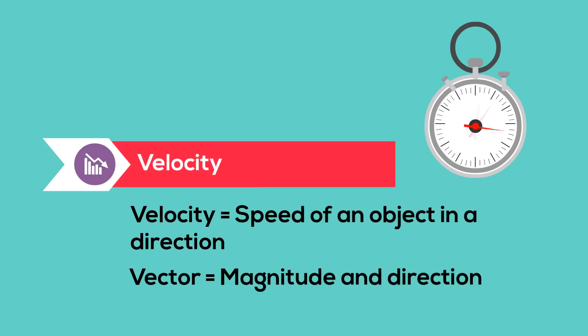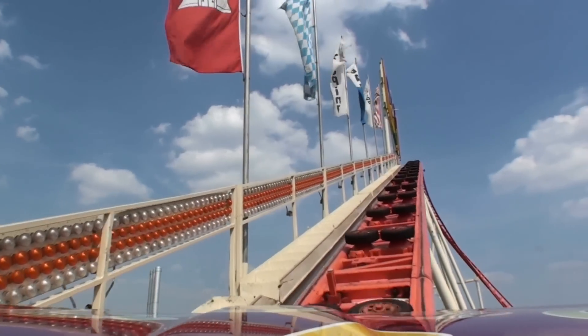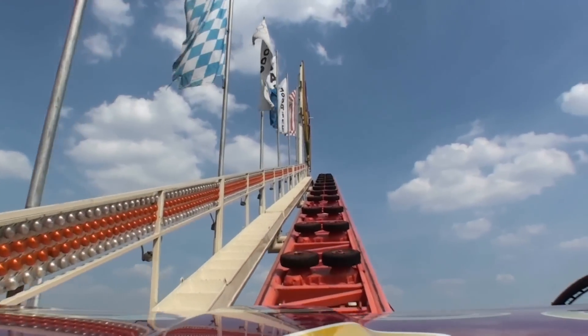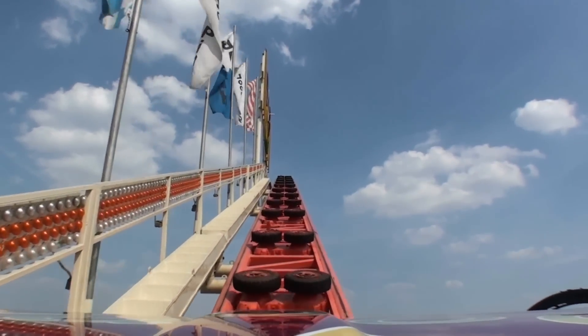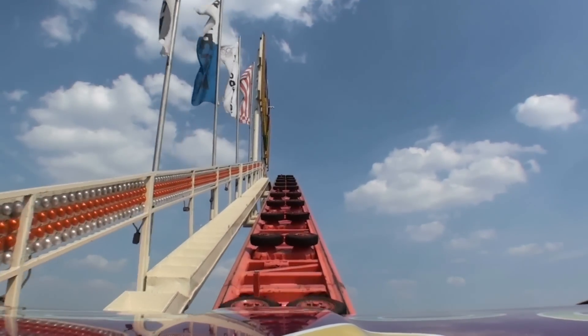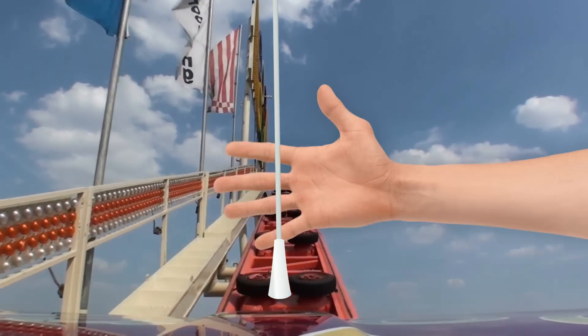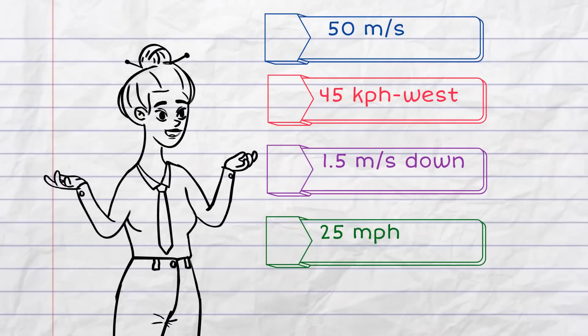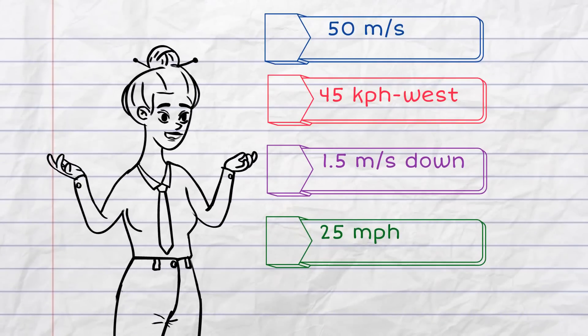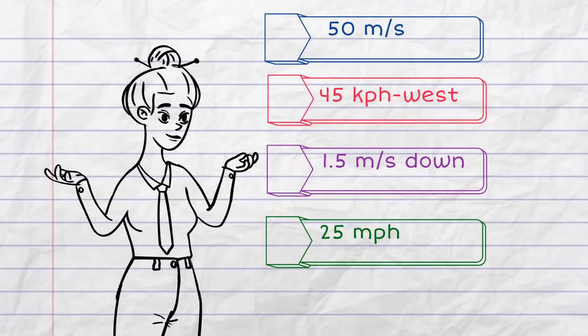This roller coaster has a velocity of 10 meters per second up. Which of these measurements would be speed and which would be velocity?